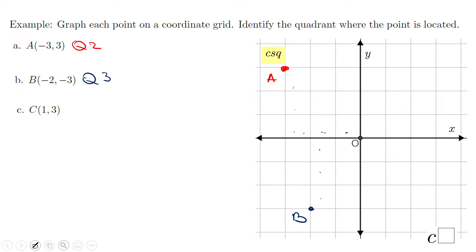Point C is at one and three. From the origin, I'm going to move one right and then three up. Right here is point C, which is in quadrant one.